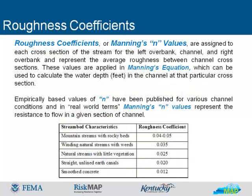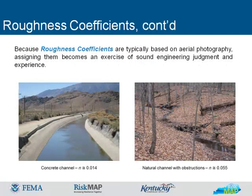Roughness coefficients, or Manning's N values, are assigned to each cross-section of the stream for the left overbank, channel, and right overbank, and represent the average roughness between channel cross-sections. These values are applied in Manning's equation, which can be used to calculate the water depth in feet in the channel at that particular cross-section. Empirically based values of N have been published for various channel conditions. In real-world terms, Manning's N values represent the resistance to flow in a given section of channel. Because roughness coefficients are typically based on aerial photography, assigning them becomes an exercise of sound engineering judgment and experience.